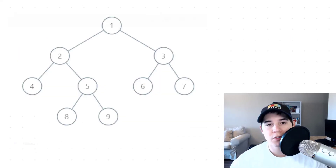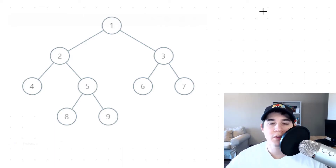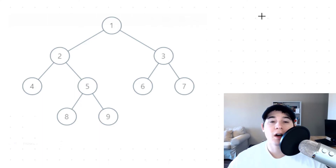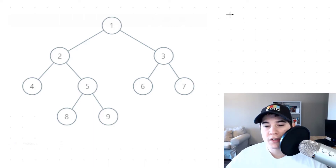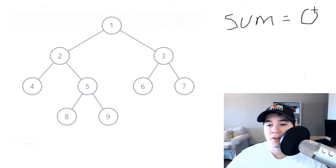For this problem I'm going to go over both the recursive and iterative solution. Let's start with the recursive solution since it is a bit easier to understand. A leaf node is just a node where both the left and right child are null. We need to find out which leaves in our binary tree are a left child. The first thing we're going to need is a variable we can call 'sum,' initialized to zero, which will keep track of our total sum as we go through the binary tree.